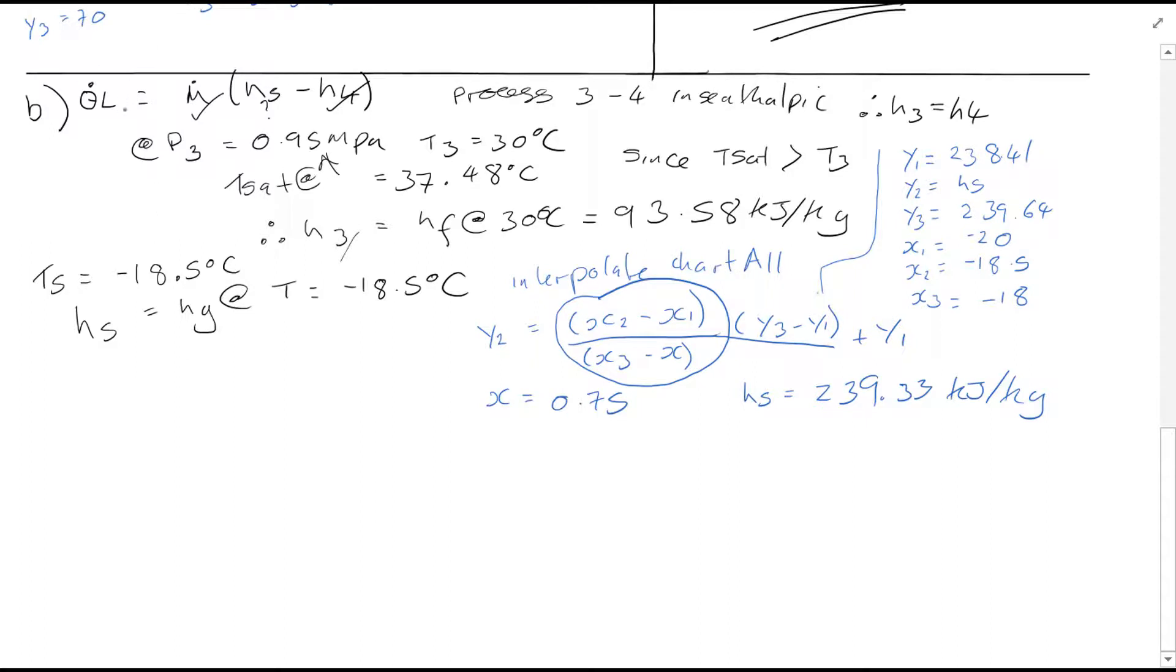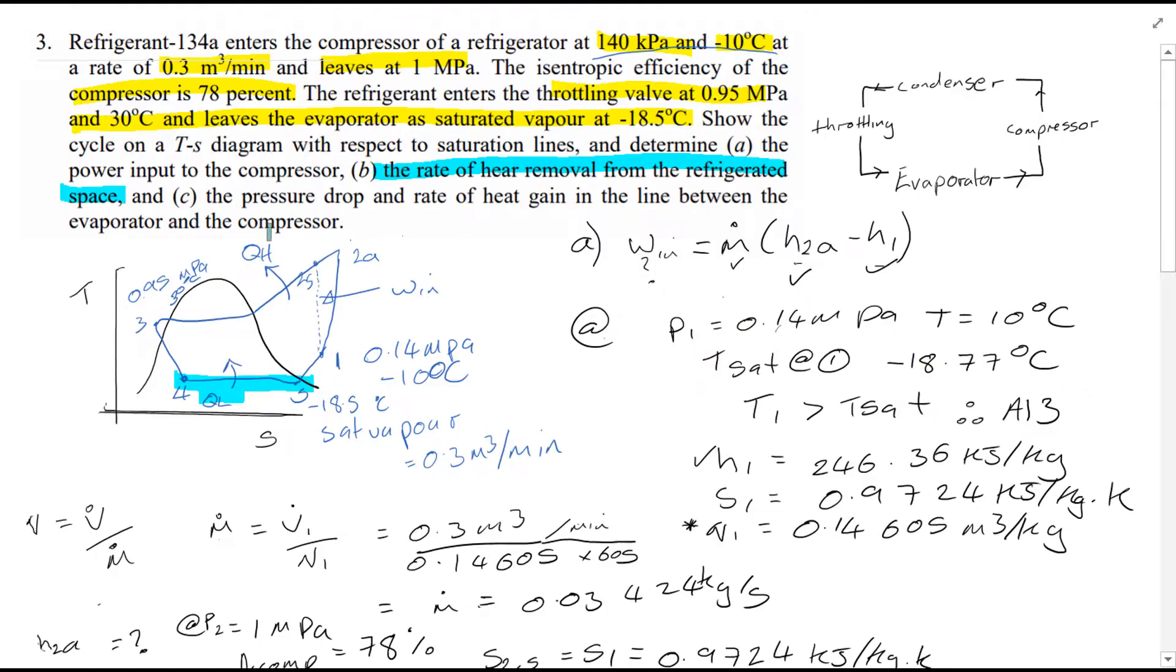Based on this, looking back at our original equation, we can easily just plug in the values, and you'll see that Qₗ is equal to 4.99 kW. Now we're just interested in part C, the pressure drop...